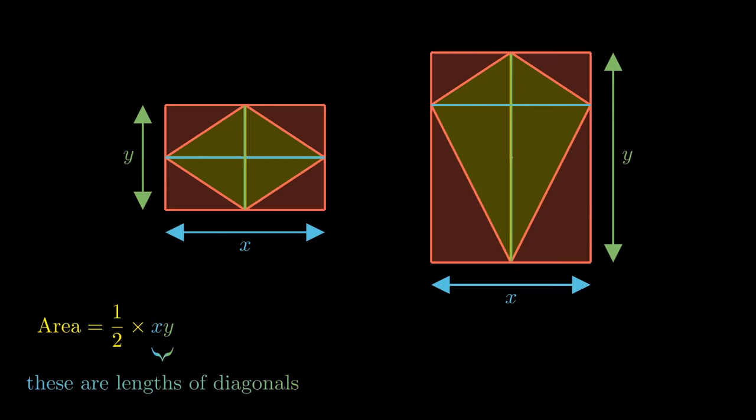Okay, and so for these special cases of the rhombus and the kite, if you know the diagonals, it's half times x times y. I don't normally use this that much.